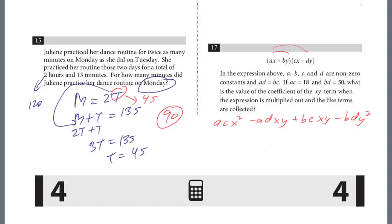All right. And so there's really a shortcut here. I just recognized it. So they're giving us these values here, like AD equals BC. And they give us the value of this is 18. They give us the value of this is 50. But the question is just asking, if it's multiplied out and the like terms are collected or combined, we want to get the value of the XY.